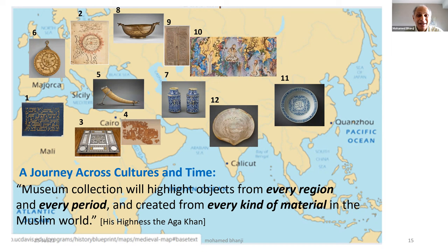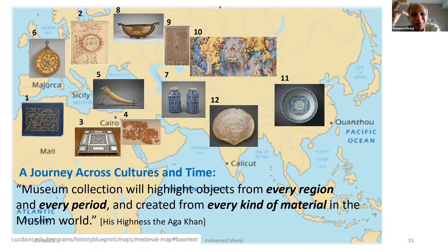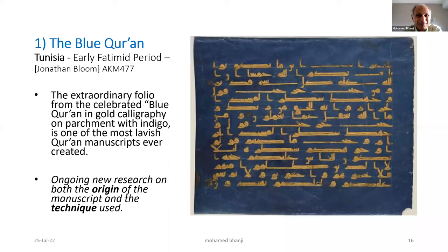Now I'm going to take you on a journey across cultures and time. I'll show you about a dozen objects and works of art that highlight the Islamic world from every region, covering every time period from the inception of Islam to the 20th century. The objects you will encounter come from every kind of material found in the Muslim world at the time, and a map shows their geographic and temporal diversity.